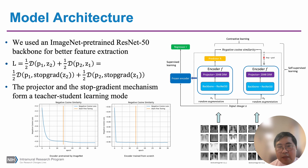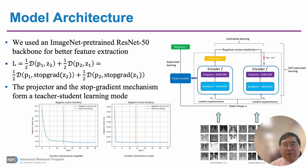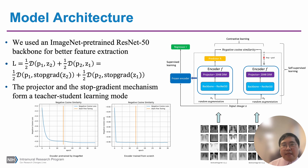In Phase 2 training, we freeze the encoder and use the outputs from the frozen encoder as training features to train a multi-layer perceptron as a regression model in a supervised learning manner, using the mean-square-error function as the loss objective. The overall model performance will be reported in the next slide.